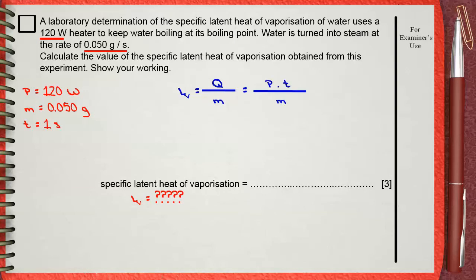Substituting using your givens, power is 120, time is assumed to be one second when mass is 0.050 grams. By calculating this, you find that the specific latent heat of vaporization of water is 2400 Joules per gram. This is a good idea to study.